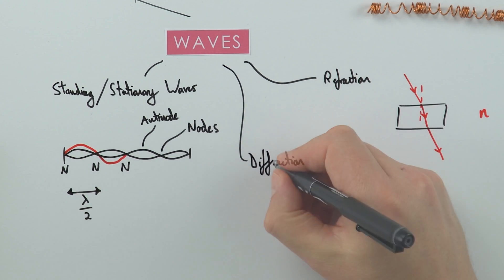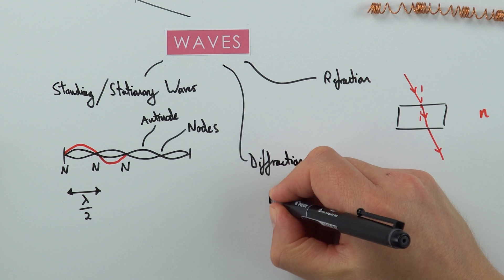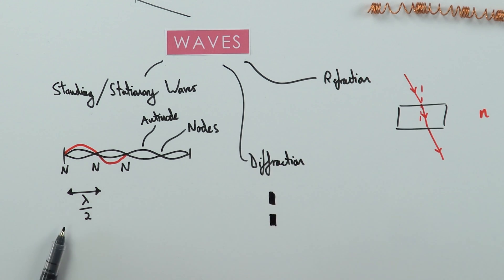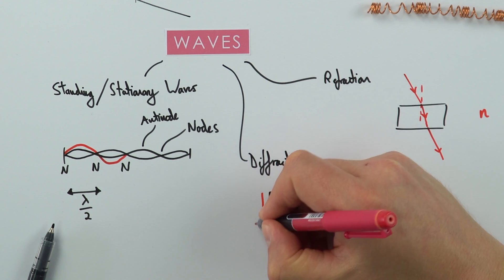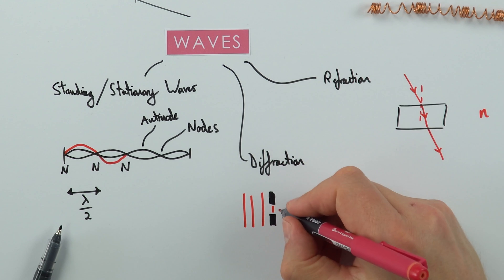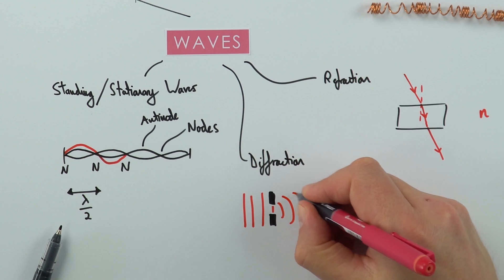Something else which is really important that's not really covered much is something called diffraction. Effectively, if we have a little gap, this is a gap over here, and maybe now we're going to be looking at the wave fronts that approach it. When the wave goes through the gap, it spreads out, and this is what we call diffraction.